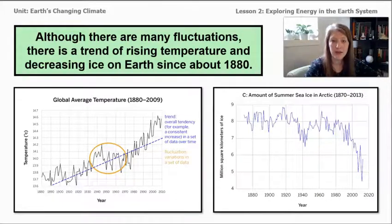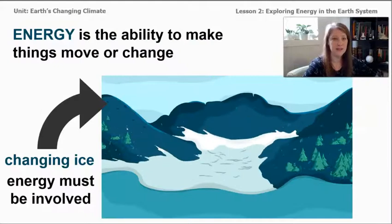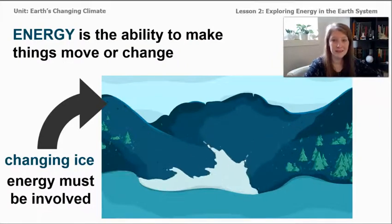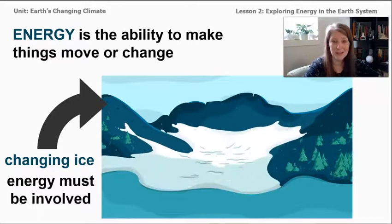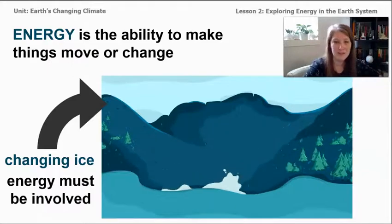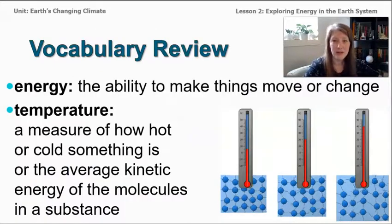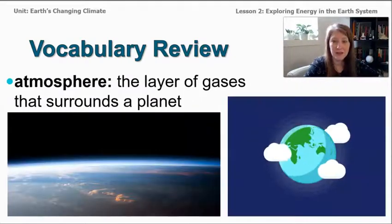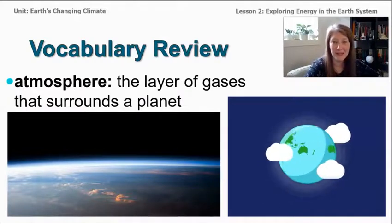As a quick review: the word energy means the ability to make things move or change. This image shows a glacier melting, which is definitely a change, so we know energy must be involved. The word temperature is a measure of how hot or cold something is, or the average kinetic energy of the molecules of a substance. The word atmosphere is the layer of gases that surrounds a planet.